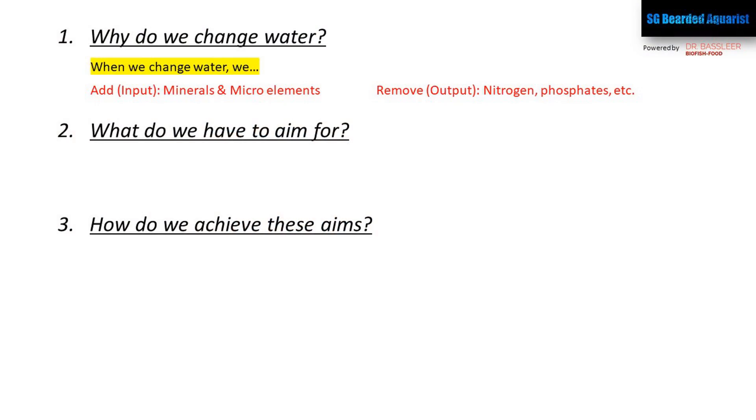When it comes to water changes, the easiest way to think of it is input and output — you're putting some things in and taking some things out. Most people think we are just removing nitrate, or nitrogen, from the aquarium system, which is true, but that's not the only reason we do water changes. There are other things we're removing and adding back in — things like phosphate. Nitrate is the most prominent one we measure, and it's a good proxy for everything else that builds up in the aquarium, but it is not the only thing we are removing.